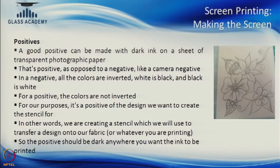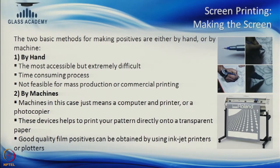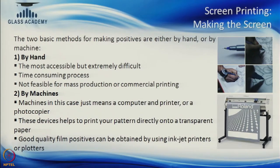We will go through the process of making the positive. You can make a positive by hand as well; there are several artistic people who want to create art by doing this by hand. As explained, a positive is simply putting black ink on photographic paper to block the light going through. But more often than not, it is done through machines. There are wide format inkjet printers available where you can make your patterns and transfer them onto transparent sheets, where accuracy can be maintained and good quality films are available.